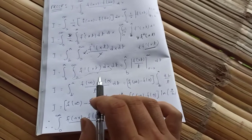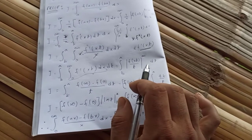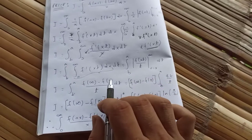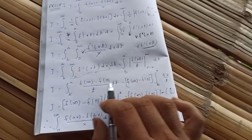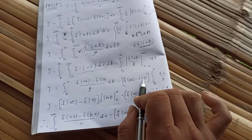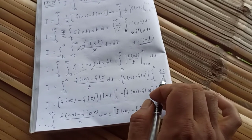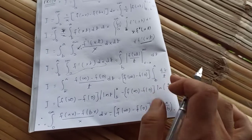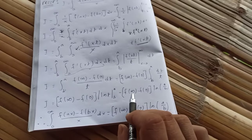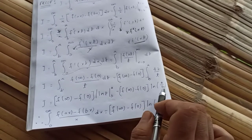Applying the fundamental theorem of calculus: x→∞ gives f(∞·t) = f(∞), and x = 0 gives f(0). So we get the integral from b to a of [f(∞) - f(0)] / t dt. Since f(∞) - f(0) is constant, this becomes [f(∞) - f(0)] times the integral from b to a of dt/t, which is [f(∞) - f(0)]·ln(a/b).